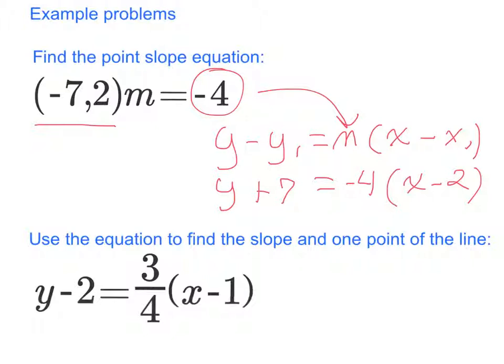In this next example, we're given an equation in point-slope form, and we want to find the point and the slope. Let's start with the slope m. Well, m is right here. This is always going to be the position of your slope. So m is 3/4.